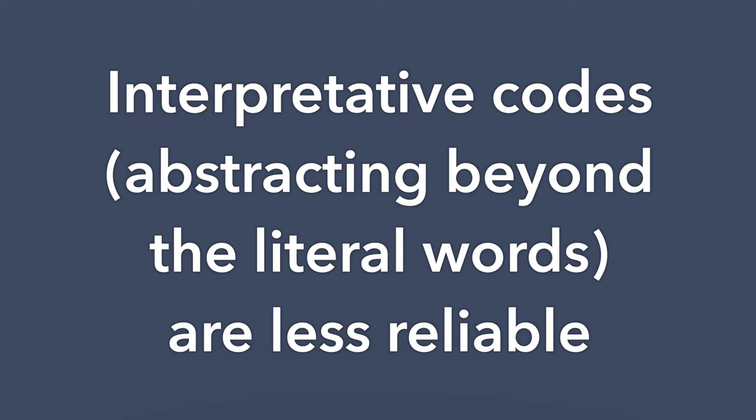With interpretive coding, you're interpreting one level beyond what's in the text. This might be something like coding for attitudes — positive or negative — or affect. Often people aren't saying 'I'm angry,' but you're interpreting from what's in the text that they might be angry. Those tend to be less reliable, and might be places where you want to make sure you're understanding anger or concern, from my own experience, in the same way.